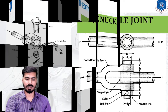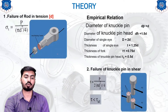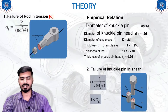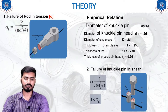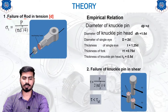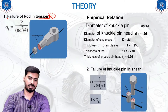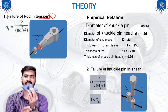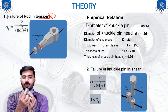Now we will start looking at the procedure of how to solve this type of example as well as how to design the knuckle joint. The first step to design a knuckle joint is the failure of the rod in tension, which is known as d. The rod is this one — as you can see in the design of the knuckle joint, the ends are the rods.